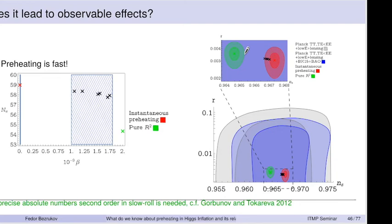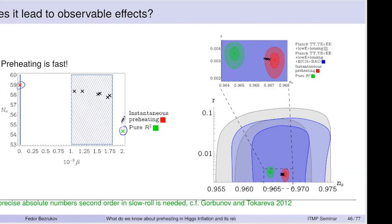The amount of expansion during preheating actually influences the predictions from inflation — where on the potential the perturbations were generated. Depending on β, there are several predictions. For pure R², reheating takes a long time because gravitational decay of the inflaton is slow. Our calculations give a range for different values of β. For the more Higgs-like regime, presumably nothing very interesting happens. For the more R²-like regime, there should be something interesting.